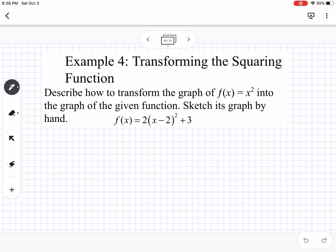This is transforming the squaring function, so the parabola. Describe how to transform the graph of f(x) = x² into the graph of the function. Sketch its graph by hand. So we know our different transformations. So this is going to make it, we could say narrow, or we can say vertical stretch. Inside the parentheses, it's going to be moving to the right 2. And then outside, it's going to be moving up 3.